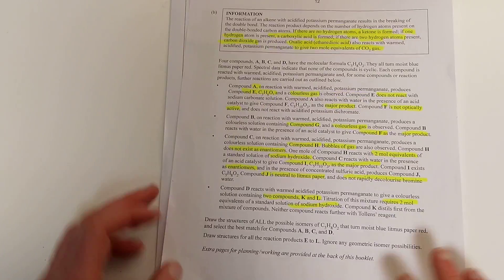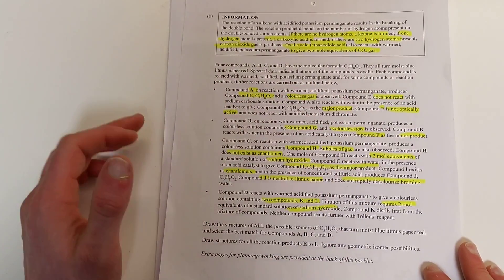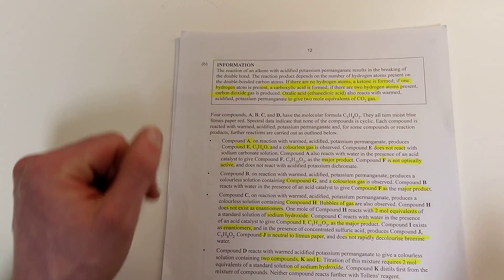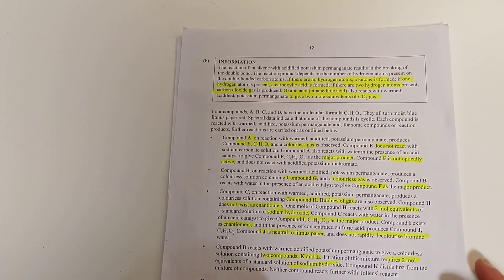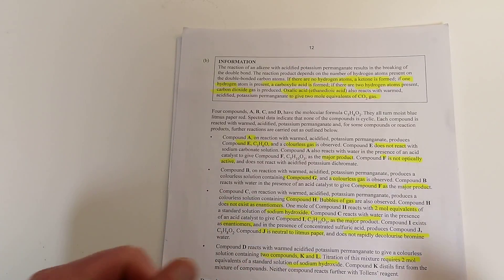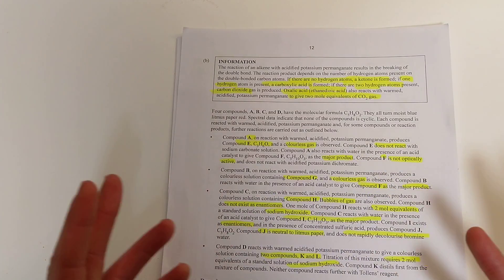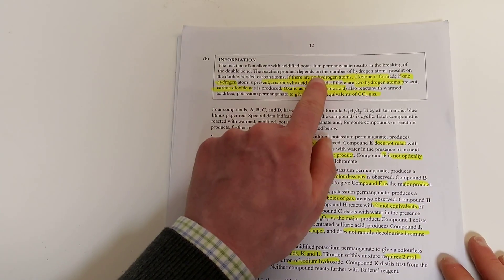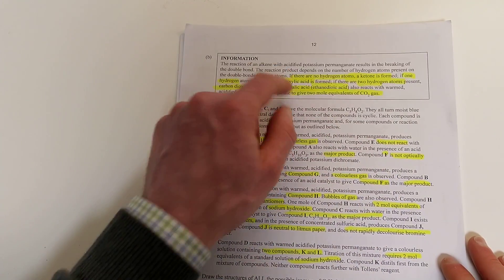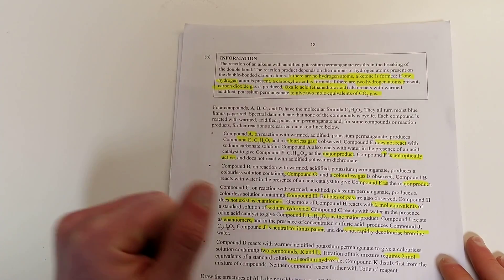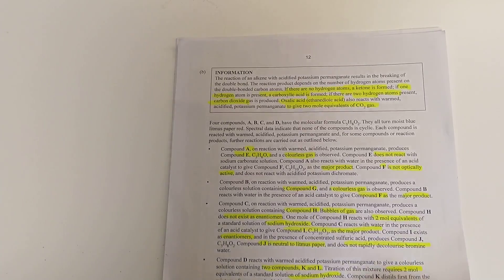Now compounds A through D all will react at some point with warm acidified potassium permanganate. And we're told in the information section, when that happens, the double bond is going to break. That alkene double bond is present in all of our isomers. And depending on how many hydrogens are attached to those carbons in the double bond, we're going to form different products. If there are no hydrogen atoms present on that carbon, a ketone's formed. If there's one hydrogen present, carboxylic acids are going to be formed. And if there are two hydrogen atoms present, carbon dioxide is going to be formed instead.